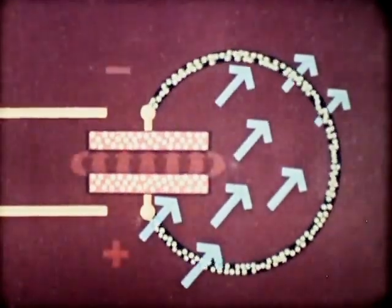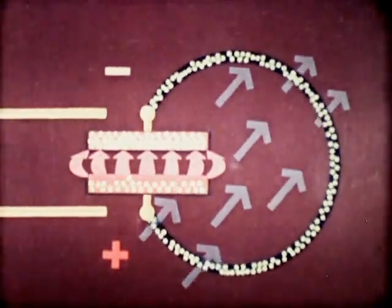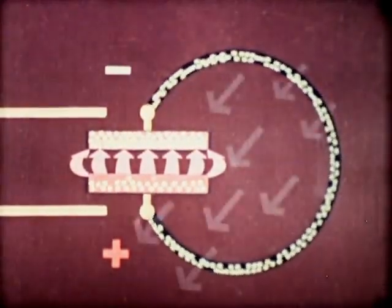Hence, the oscillation of electrons is accompanied alternately by an electric field in the capacitor and a magnetic field in the coil.